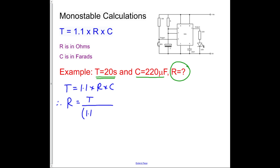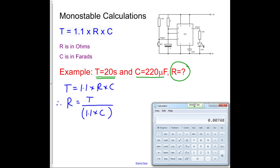Now I always use brackets, because it saves making mistakes with the calculator, dividing instead of multiplying, and multiplying instead of dividing. So let's get our Windows calculator, and we put in the time, which is 20. We divide by, open brackets, 1.1, multiplied by the capacitor value we have, which is 220 exponent minus 6. We close the brackets, and we press equals.